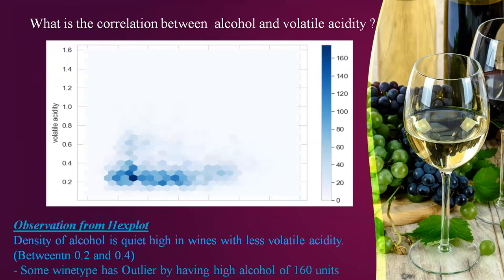What is the correlation between alcohol and volatile acidity? From the hex plot, we observe that the density of alcohol is quite high in wines with less volatile acidity. The brightness of the color shows the density in the hex plot — darker color shows it is highly dense and lighter color shows it is very less dense with alcohol.